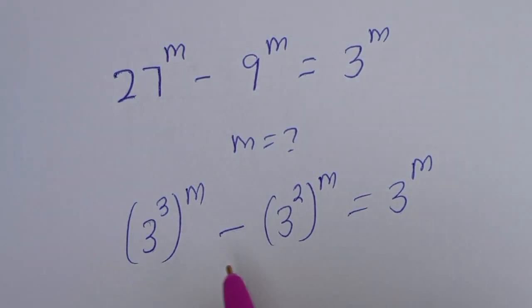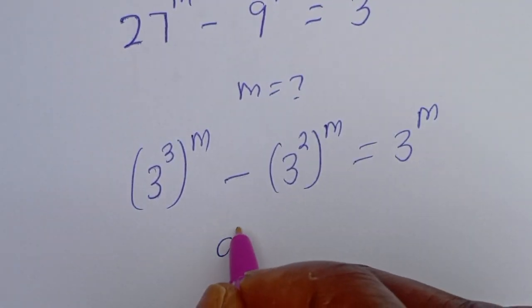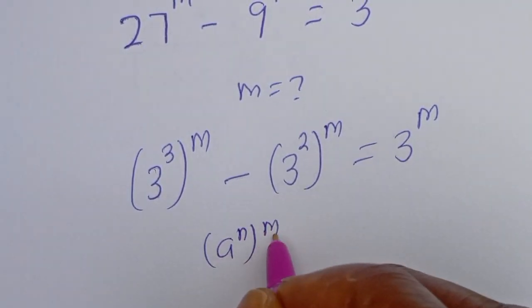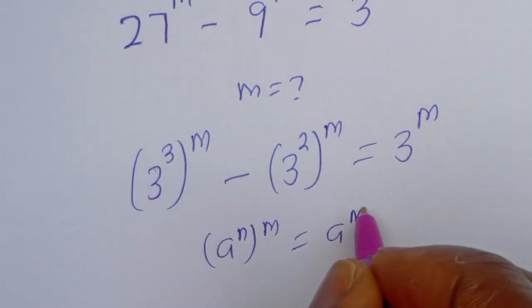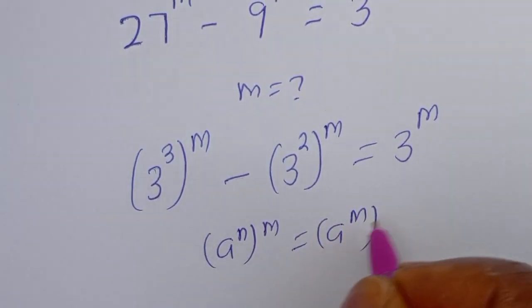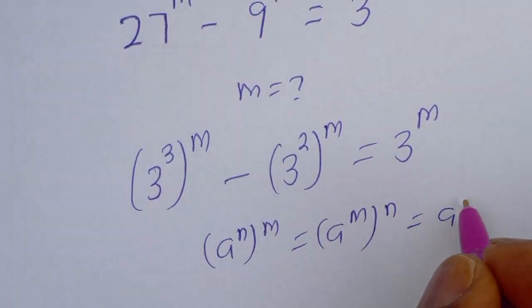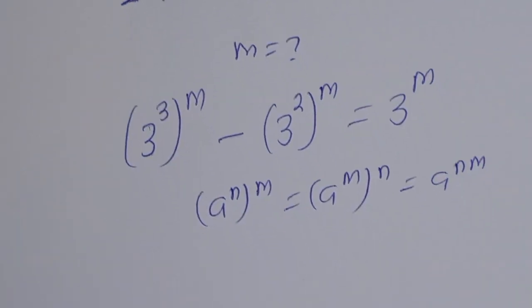Take note that if you have L to the power of M, to the power of N, this is equal to L to the power of N times M.